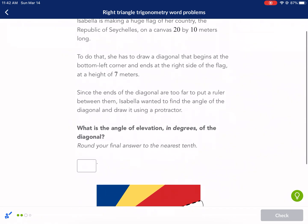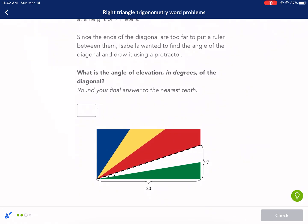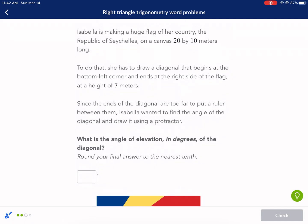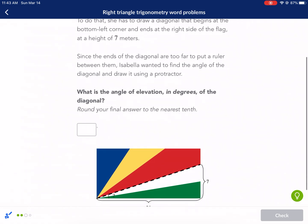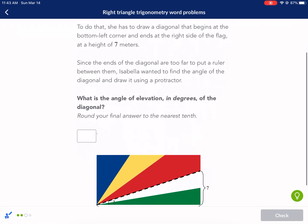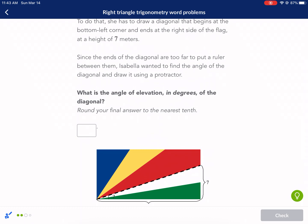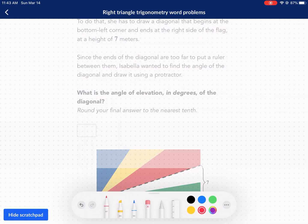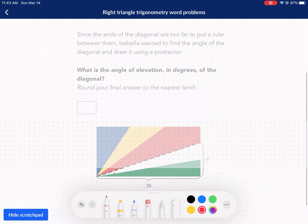Next problem. This is a cool flag, actually. This is my favorite country's flag. Isabella is making a huge flag of her country, the Republic of Seychelles, on a canvas 20 by 10. To do that, she has to draw a diagonal that begins at the bottom left and ends on the right side at a height of 7 meters. Since the ends of the diagonal are too far to put a ruler between them, Isabella wanted to find the angle of diagonal and draw it using a protractor. This is actually a good relevant problem here.